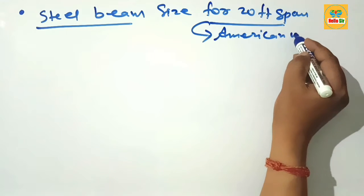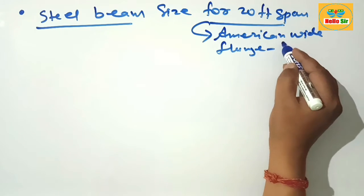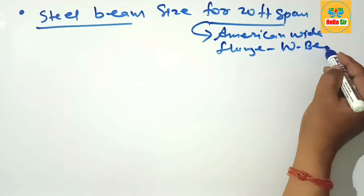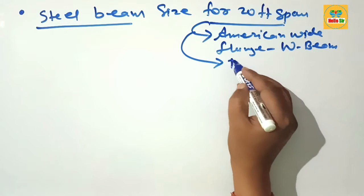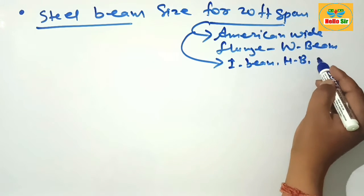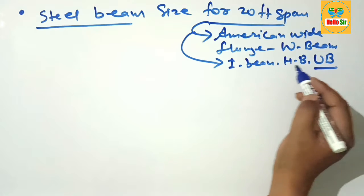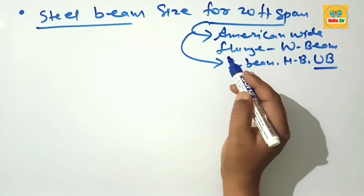Steel beams have several names: I beam, H beam, and universal beam. There are multiple names for steel beams as per American and UK practices.